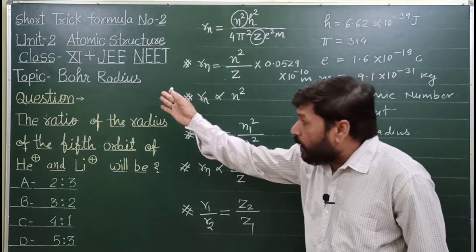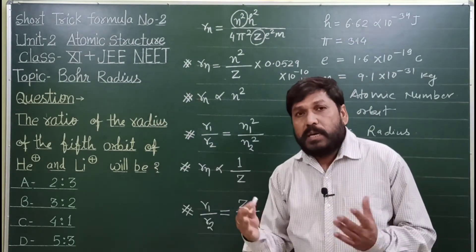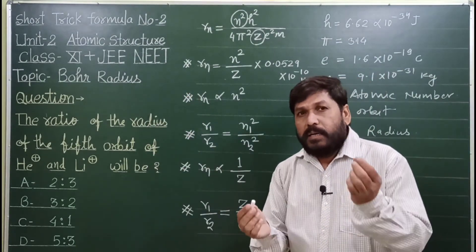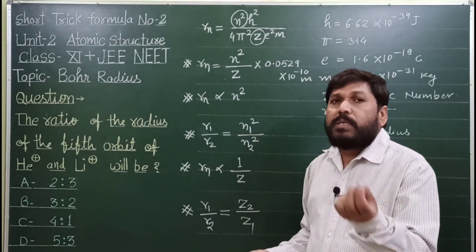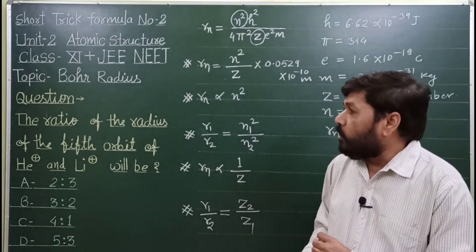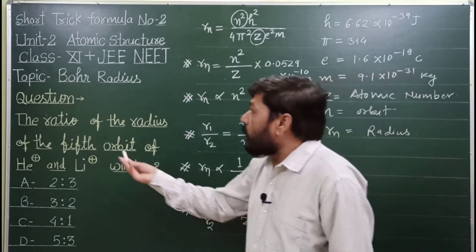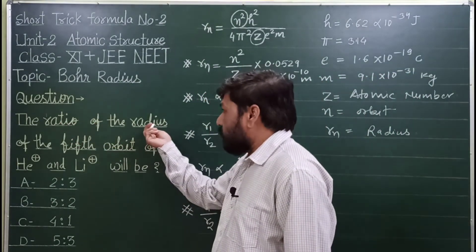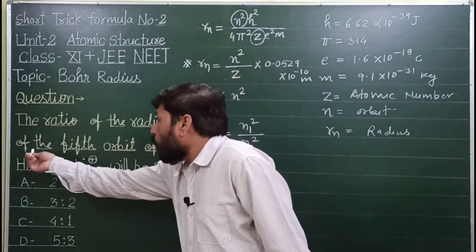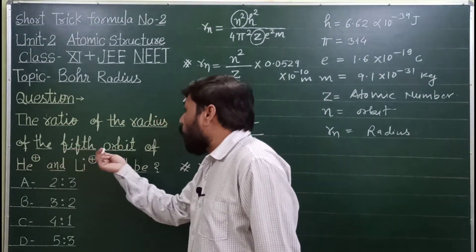How do we apply this formula? This question is the ratio of the radius of the fifth orbit.